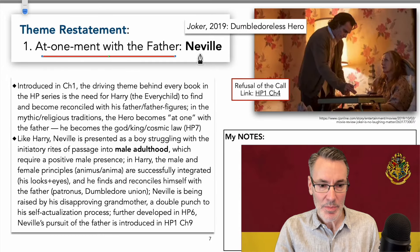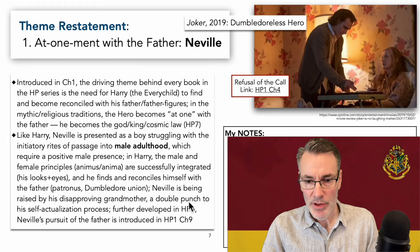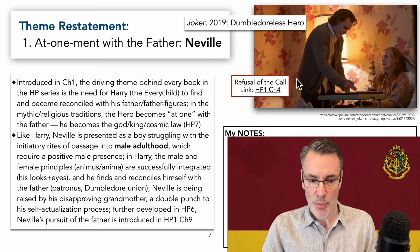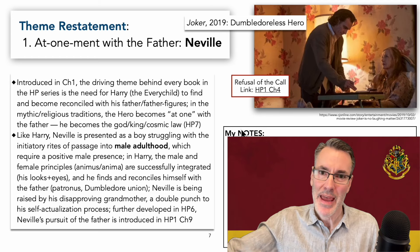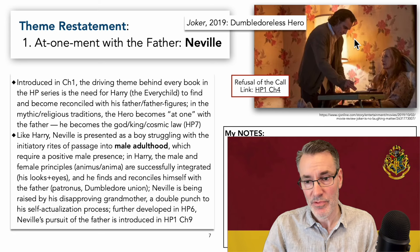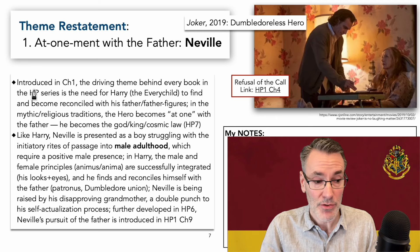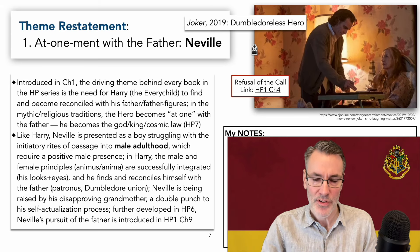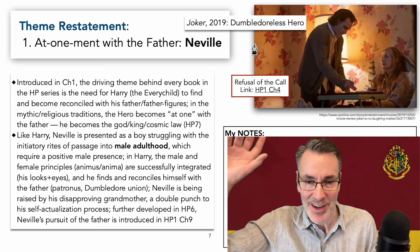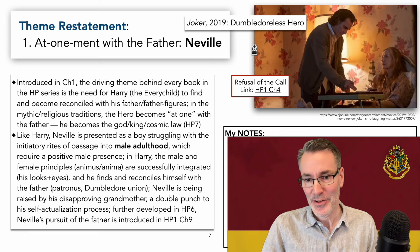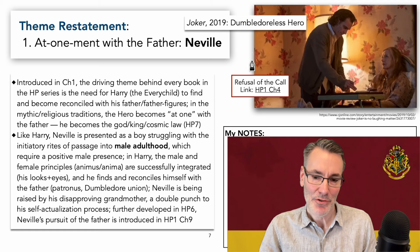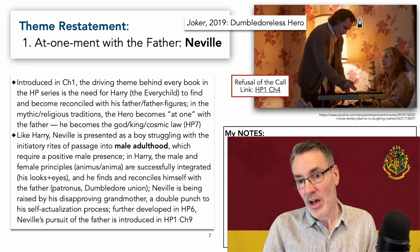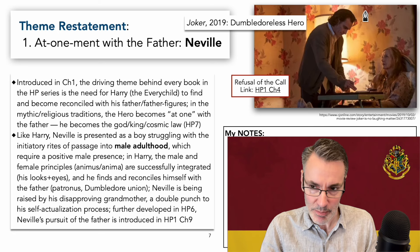Let's look at the first theme: at-one-ment with the father regarding Neville. J.K. Rowling understood the importance of the father figure in the lives of young boys and men. Without those positive, outward-oriented male figures in their lives, boys can very often not develop. This theme was introduced way back in chapter one — it runs through the entire Harry Potter series. All these books deal in some way with Harry trying to identify with, connect with, and reconcile with his father figures. J.K. Rowling understood that without those figures, boys can lose their way.